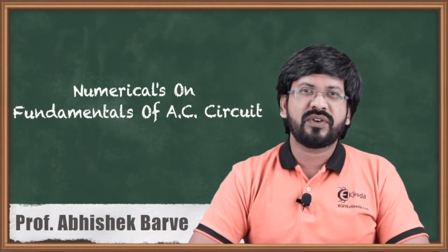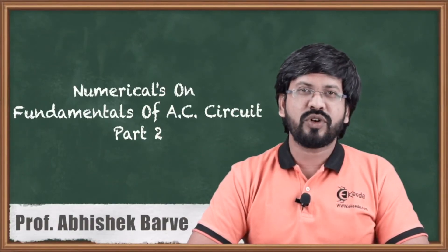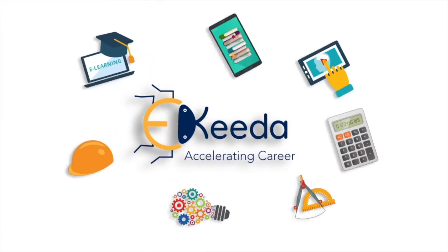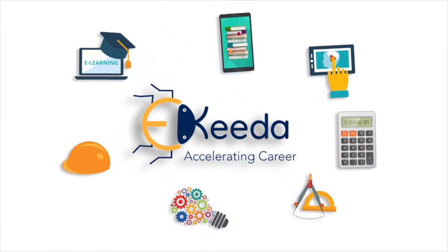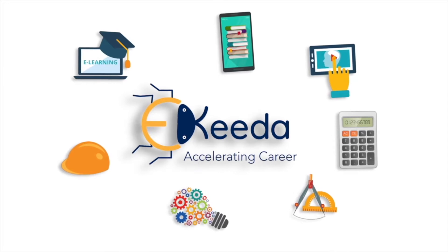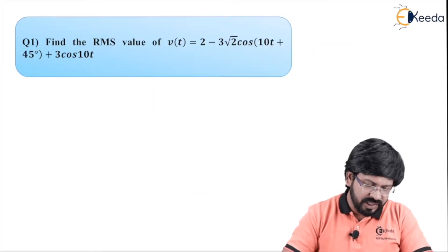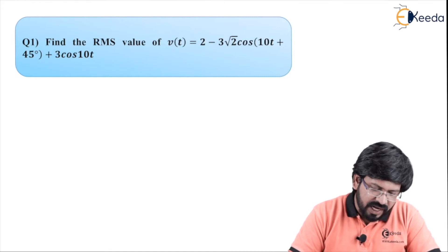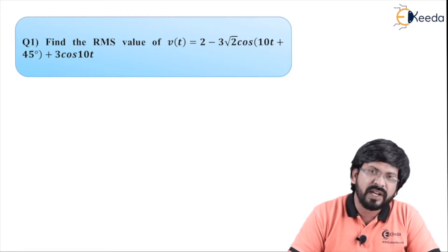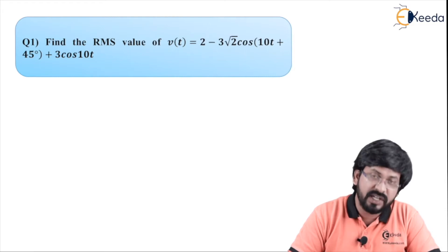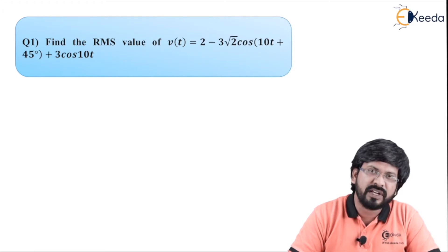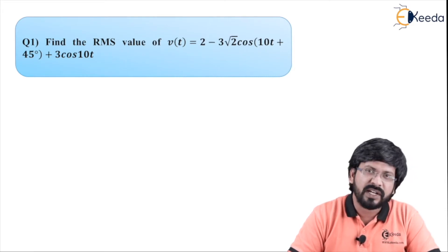Hello friends, in this video we will learn more numericals on AC circuits. Question number 1 is now appeared on your screen. It says find RMS value of V(t) equal to 2 minus 3 root 2 cos of 10t plus 45 degree plus 3 cos of 10t.